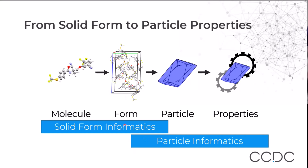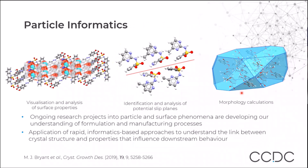Particle informatics picks up from after that. We start to think about what is the solid form we're interested in, what sort of particles does that produce, and how can we use the knowledge from the CSD and the tools in CSD Particle to understand the properties of those particles. There are three key parts to the CSD Particle module in particle informatics shown on the screen just now.